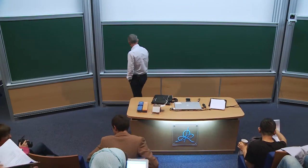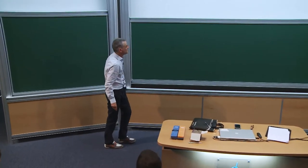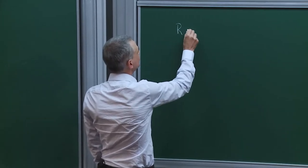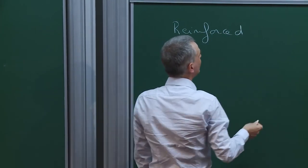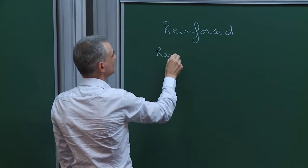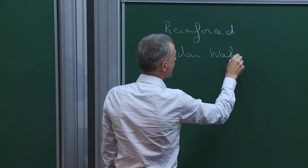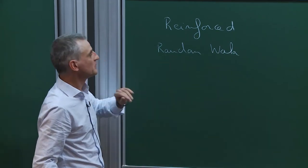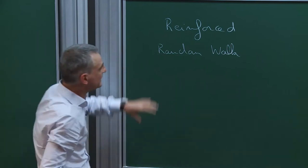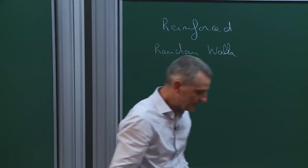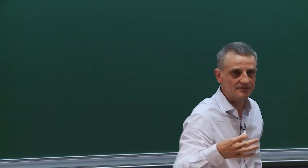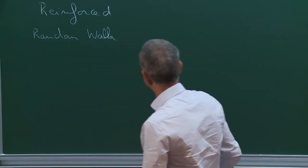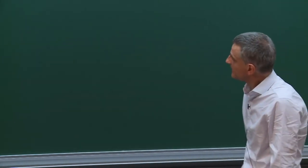The topic of my talk will be mainly about a family of reinforced random walks. I will define later precisely what I mean by that. What is this reinforced random walk? In two words: it's a family of processes that have a tendency to come back to their past trajectory. There's a reinforcement in the sense that they want to come back to sites where they have visited in the past.